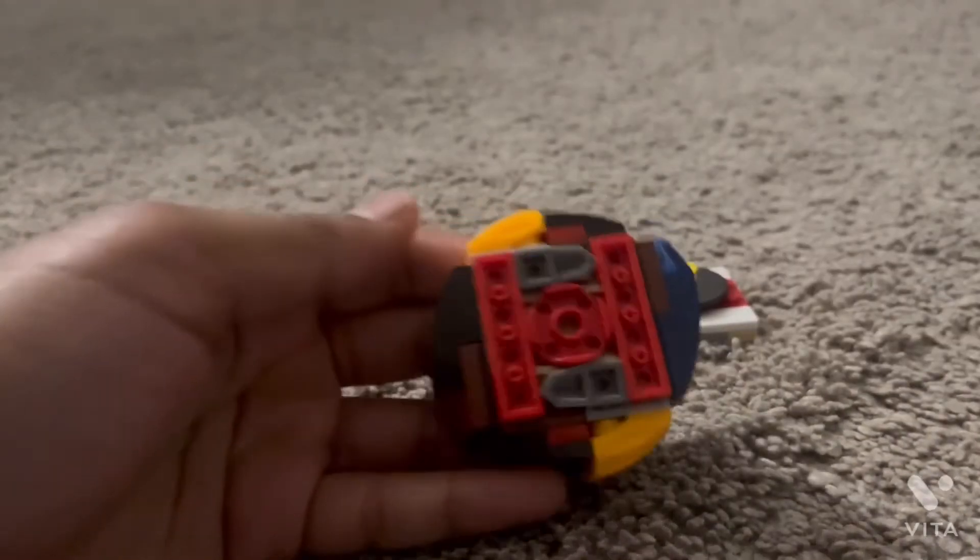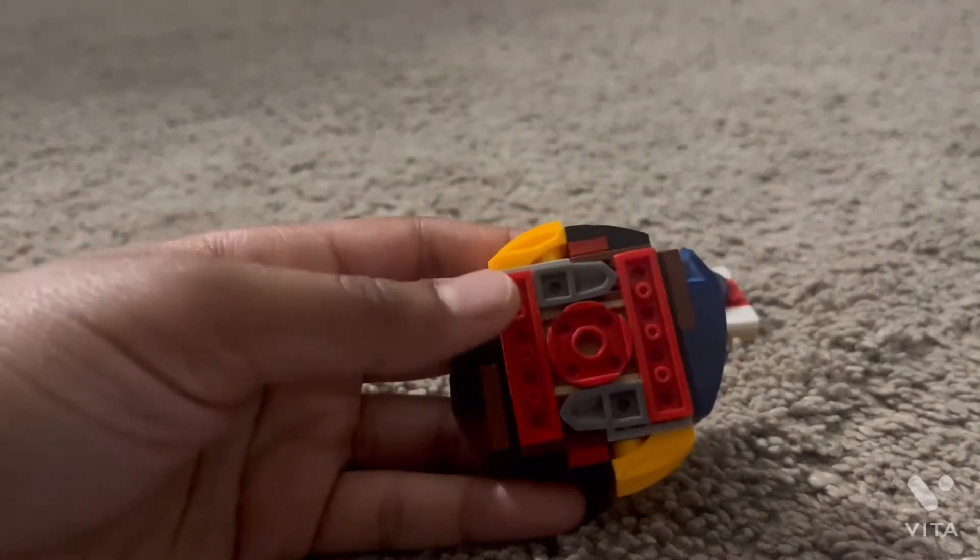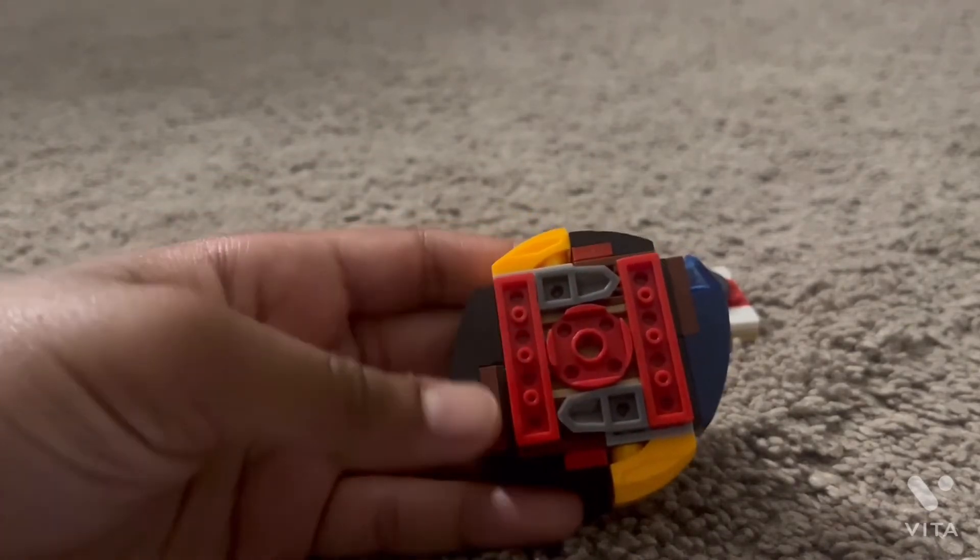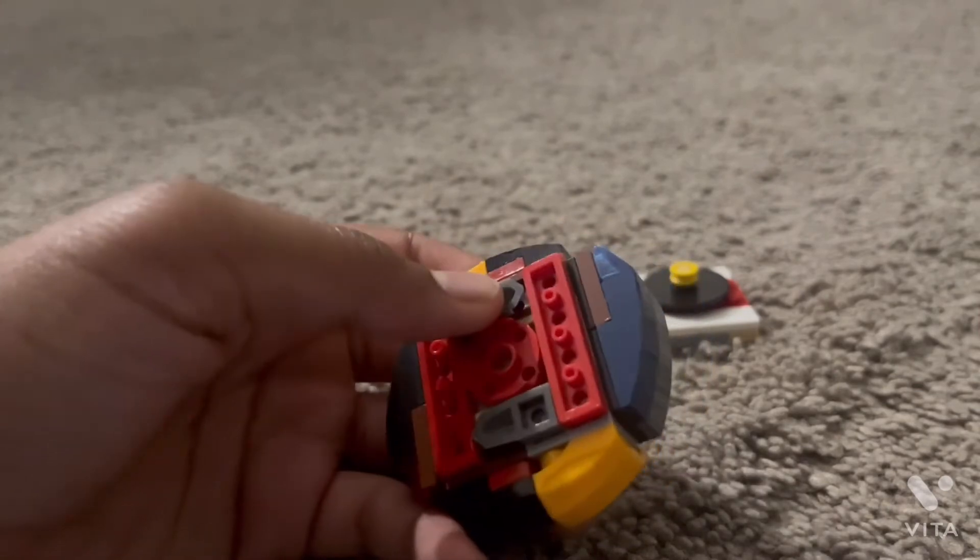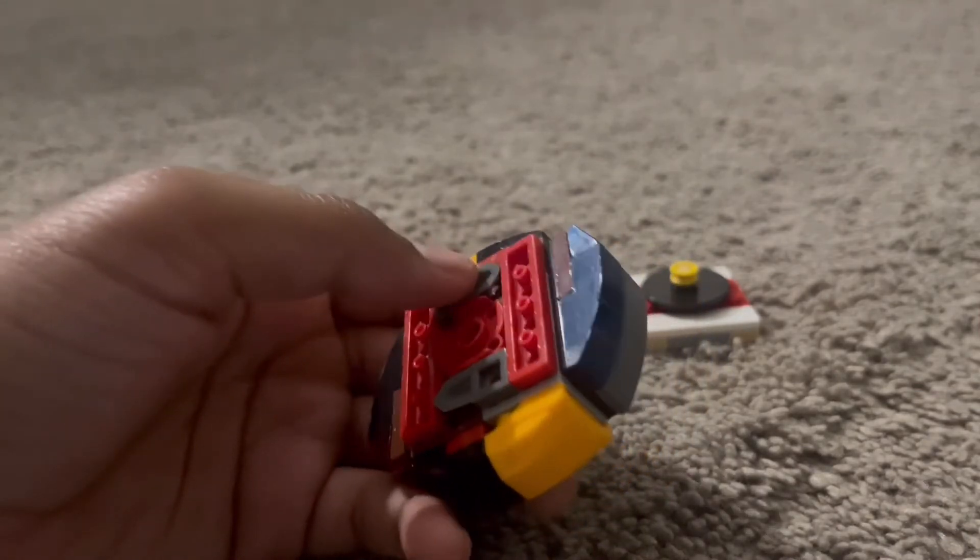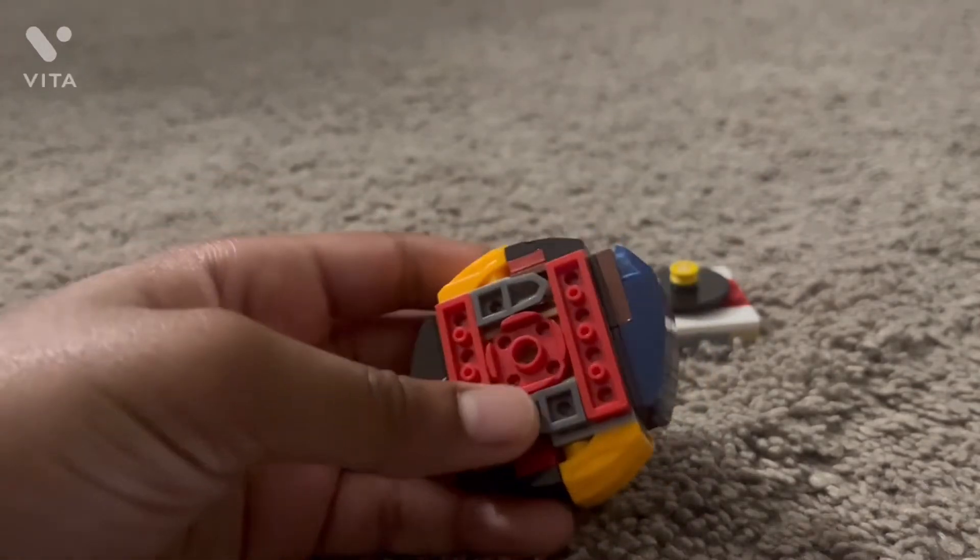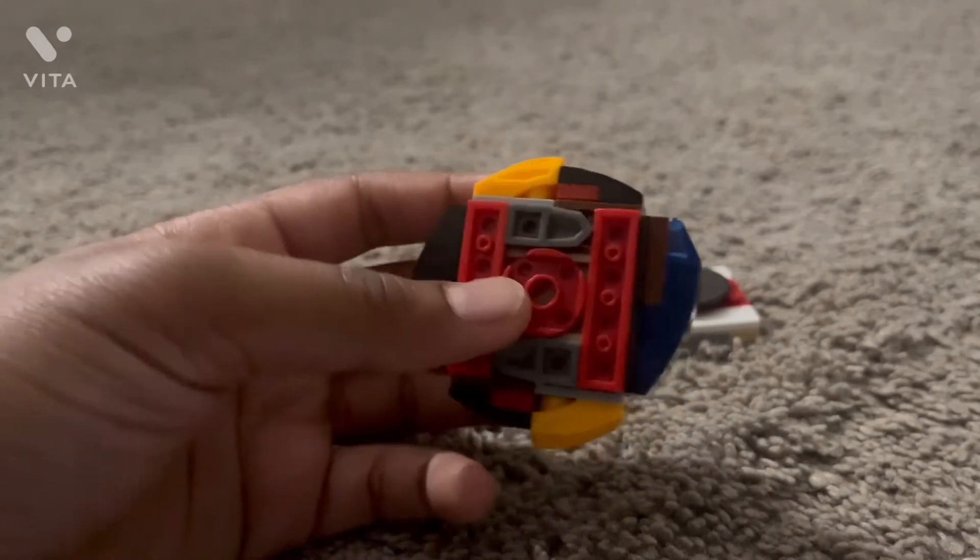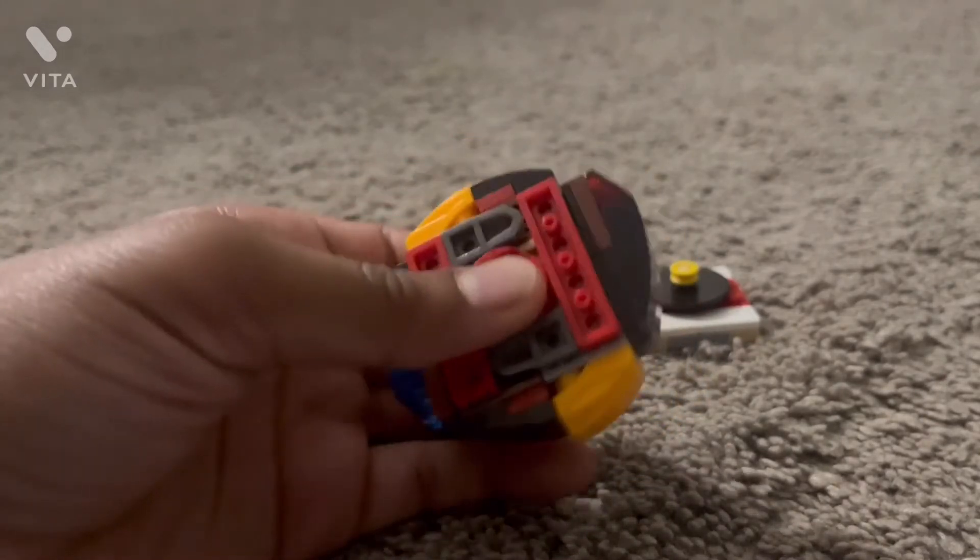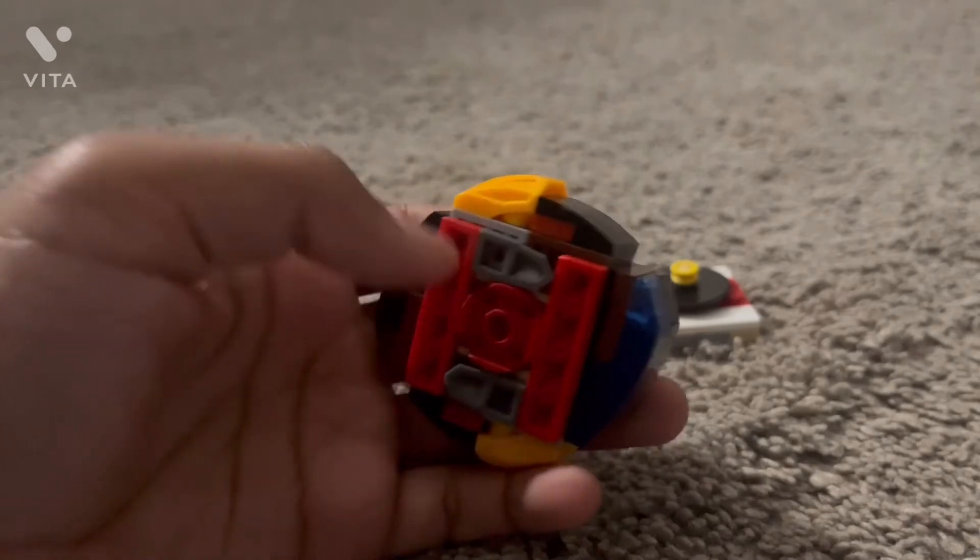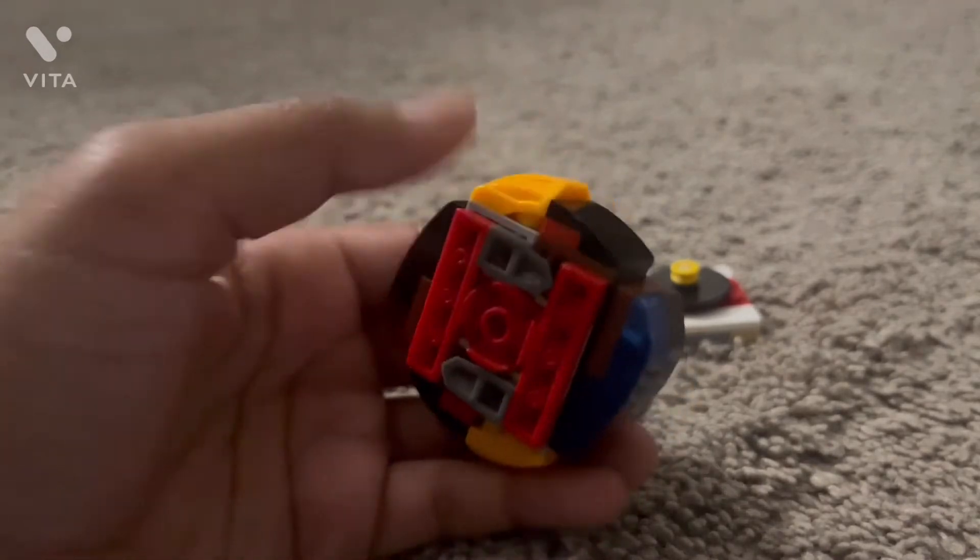So here's the Hammer Sword Flame layer. It has these two red 1x4s and it has these two sword edges I guess you could call them that.